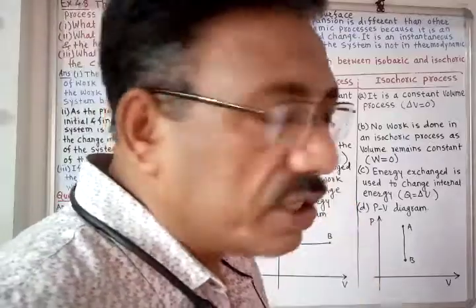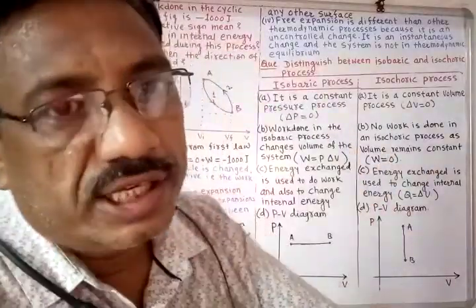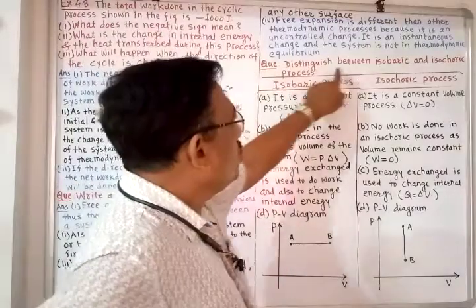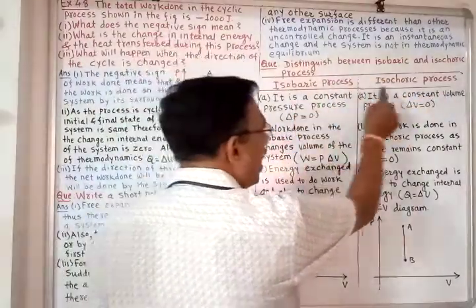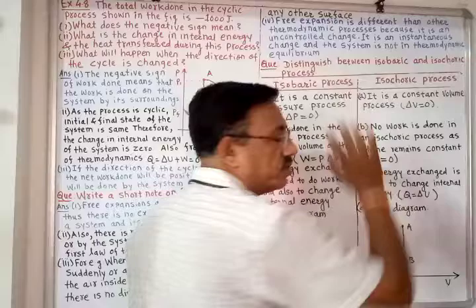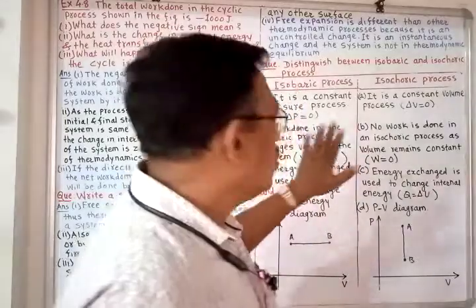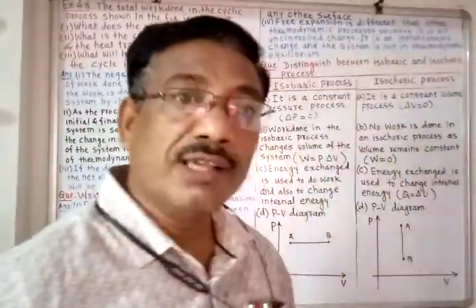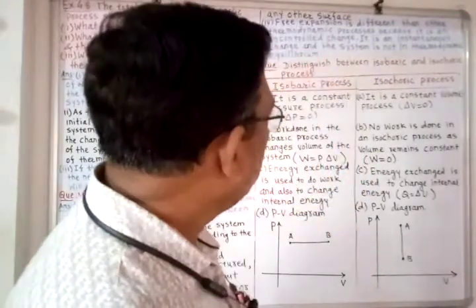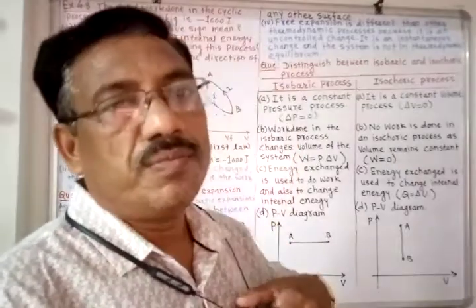Now we will distinguish between isobaric and isochoric processes. Isobaric means pressure is constant; isochoric means volume is constant; isothermal means temperature is constant; adiabatic means no exchange of heat between the system and the surrounding.